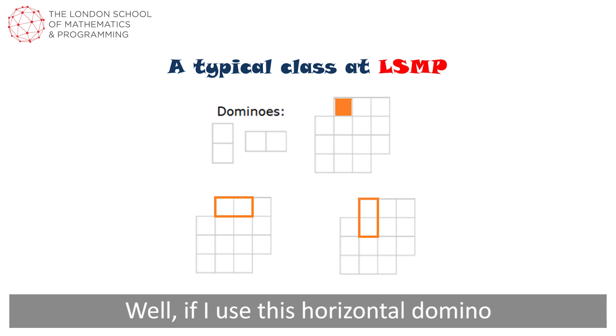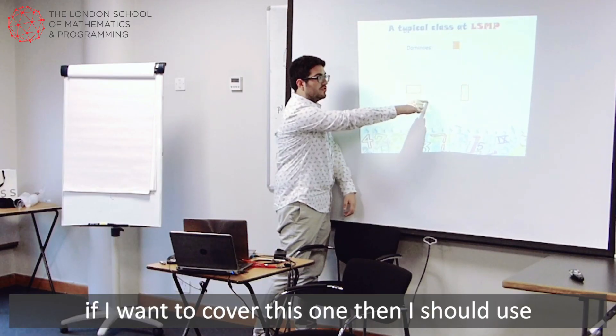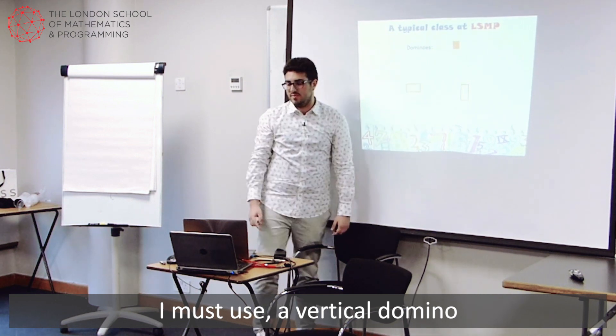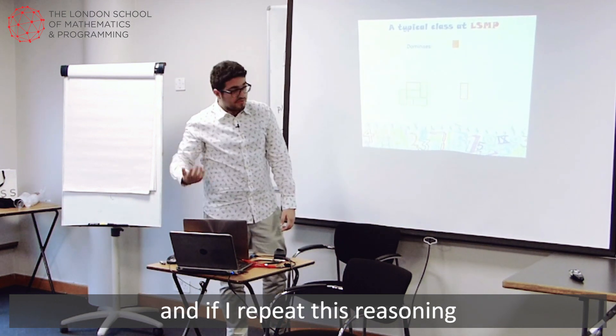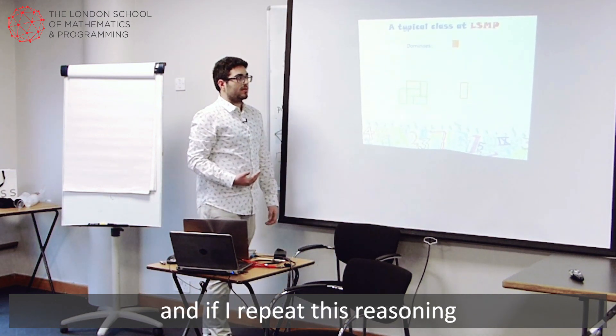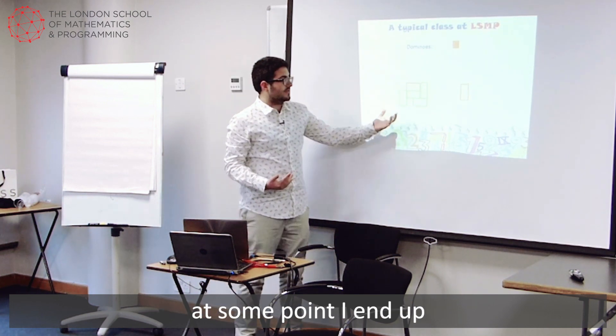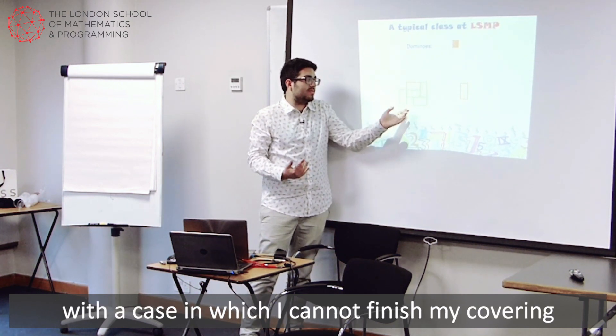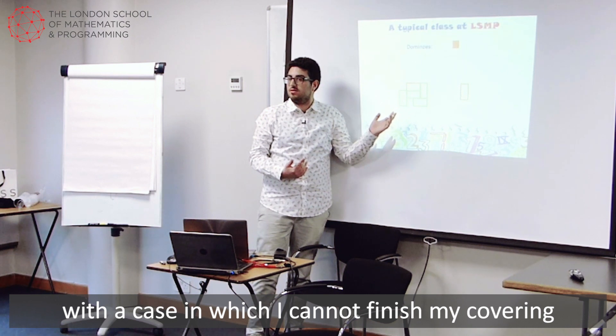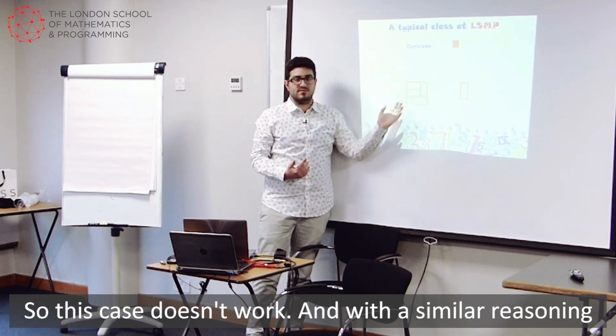Well, if I use this horizontal domino, then I have some forced cells. For example, if I want to cover this one, then I must use a vertical domino. And if I repeat this reasoning, at some point I end up with a case in which I cannot finish my covering. So this case doesn't work.